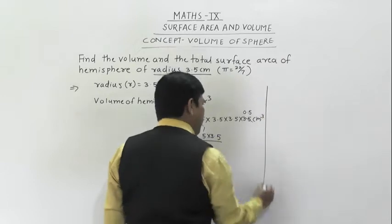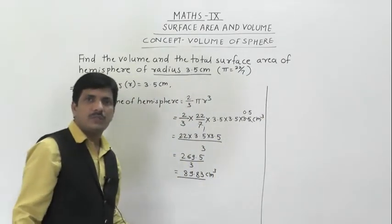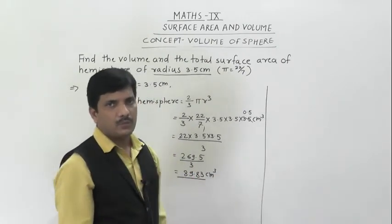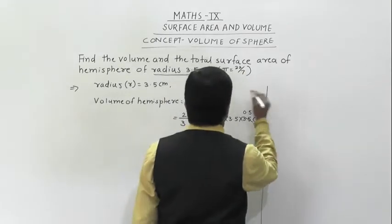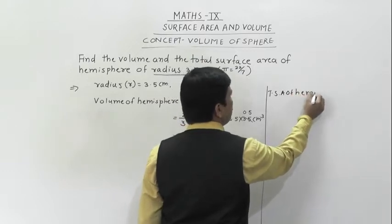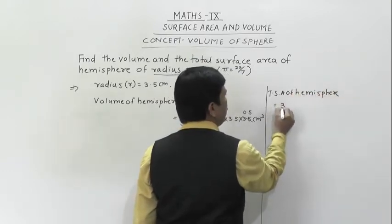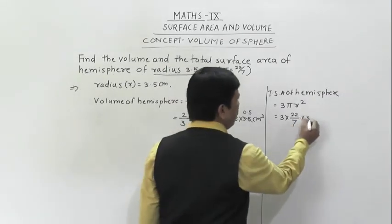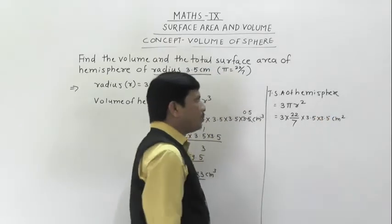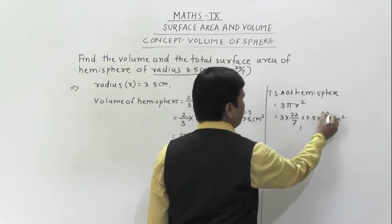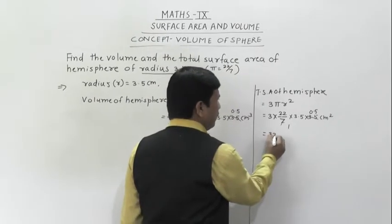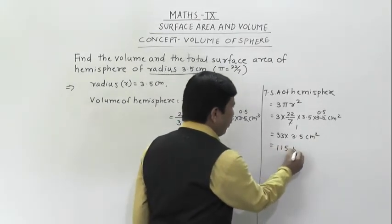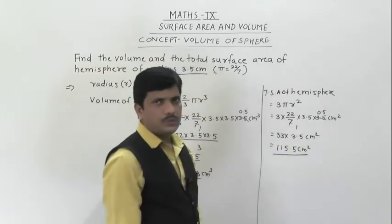For total surface area of the hemisphere: the curved surface area is 2πR², and we add the base circle area πR², giving total surface area = 3πR². So 3 × (22/7) × 3.5 × 3.5. Again 7 cancels with 3.5, giving 3 × 22/2 × 3.5 = 33 × 3.5 = 115.5 cm². This is the total surface area.